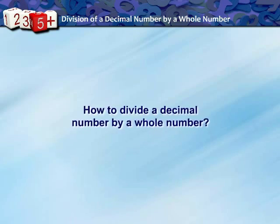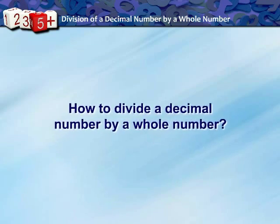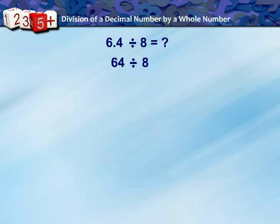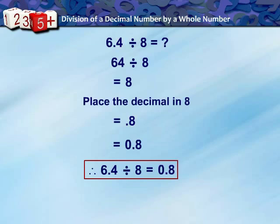Let us learn how to divide a decimal number by whole number. Take this example 6.4 divided by 8. By converting it to fraction we can calculate the value, or let us first divide 64 by 8. We get 8. We see there is one digit to the right of the decimal point in 6.4. Place the decimal in 8 such that there would be one digit to its right. So we get 0.8.